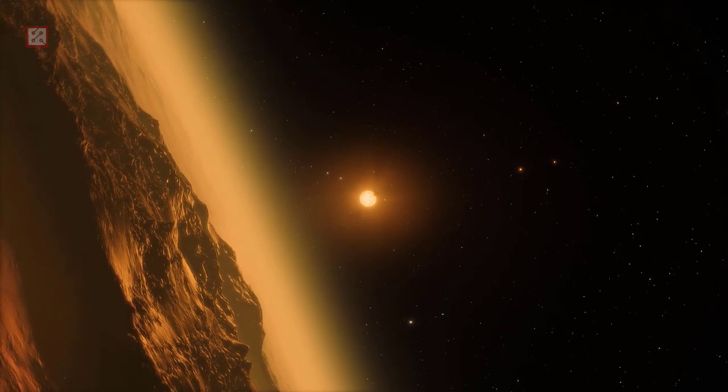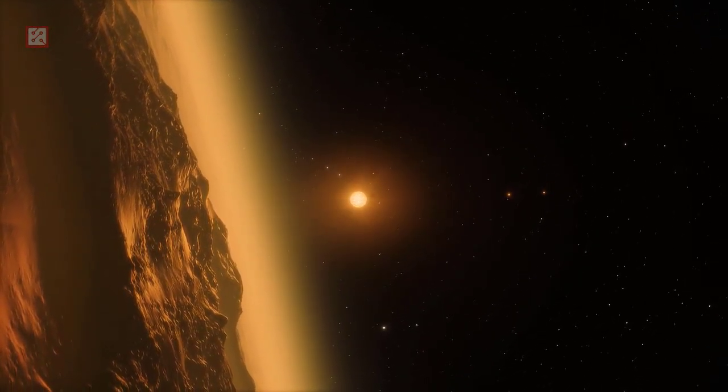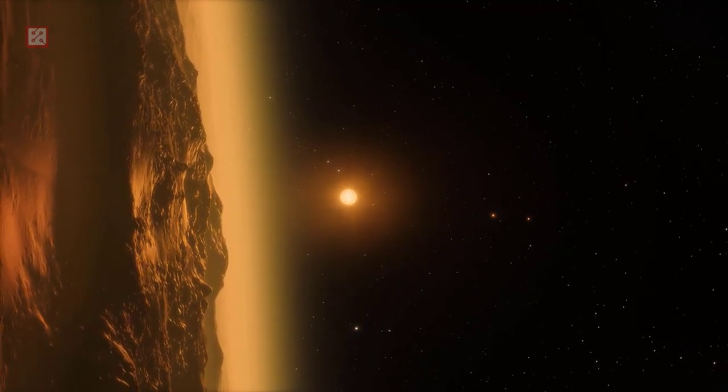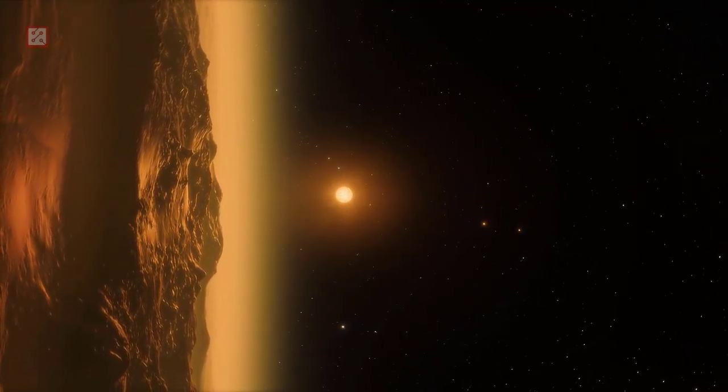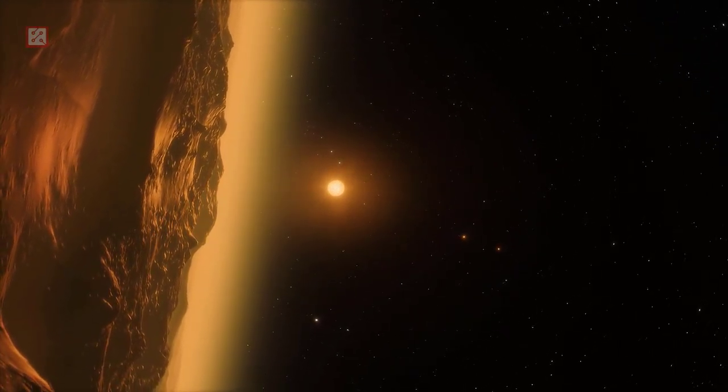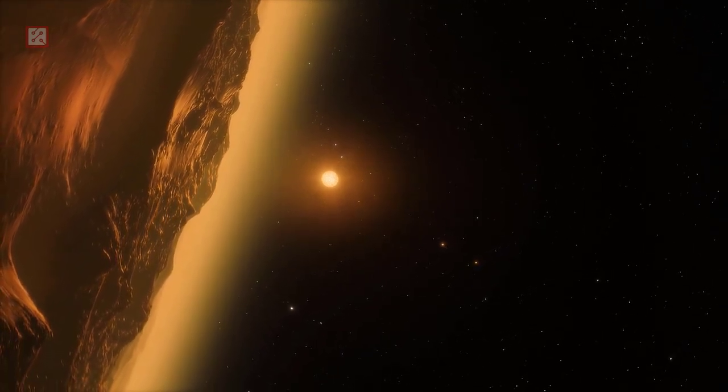In some respects, TRAPPIST-1D is one of the most Earth-like exoplanets found. While being significantly smaller, it receives about the same amount of irradiation as Earth and appears to be very similar in temperature as well. It does not have a large hydrogen-based atmosphere, which would render the planet uninhabitable if one were to exist.